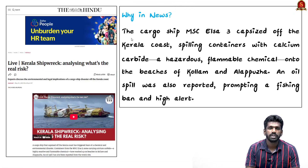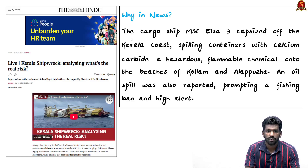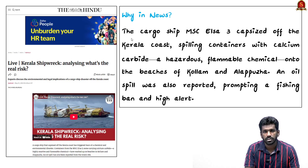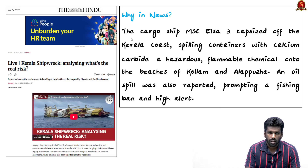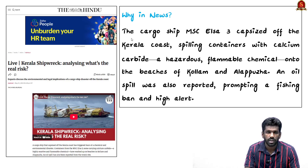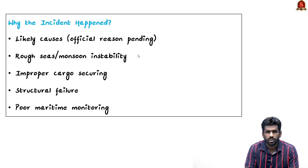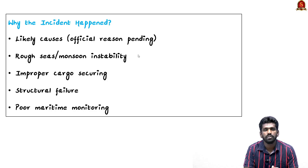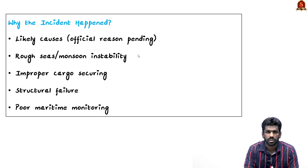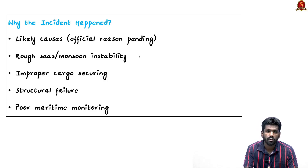A cargo ship named MSC Elsa 3 fell off the coast of Kerala. Several containers were washed ashore in Kollam and Alappuzha, some containing calcium carbide, a dangerous chemical. This raised concerns about chemical leaks, fire, and serious environmental damage. An oil spill was also reported, leading authorities to ban fishing and issue a high alert along the coastline. The exact reason for the ship's sinking — rough monsoon sea conditions, poor cargo handling, or inadequate monitoring — has not yet been confirmed.